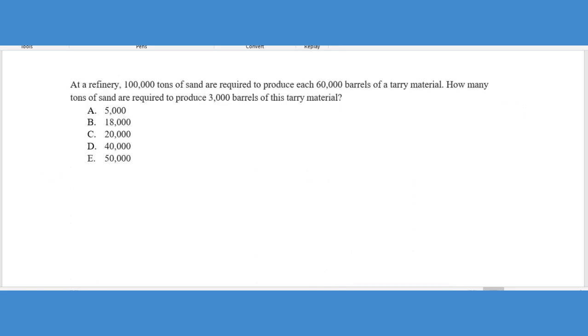We can see here in this next question, another word problem. It says at a refinery, 100,000 tons of sand - I'm just going to go ahead and mark that. And keep in mind I'm using computer technology here. I can highlight, I can change colors. You would want to annotate this stuff with your pencil, maybe underline these things. That would be really important so that as you're setting up the problem, you have a quick way to go back and find the relevant information. So 100,000 tons of sand are required to make 60,000 barrels of this material. It says how many tons of sand do we need to make 3,000 barrels of the tarry materials?